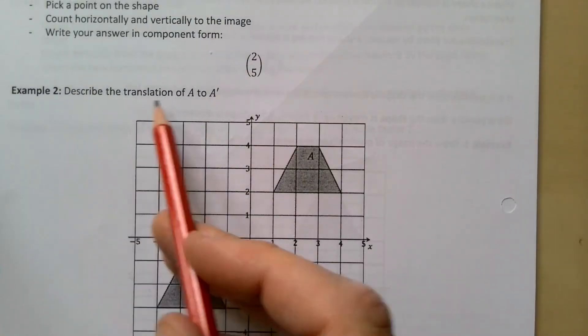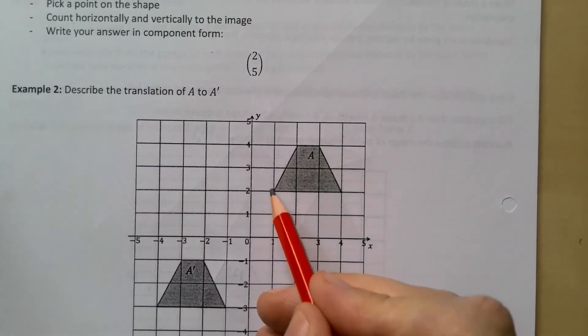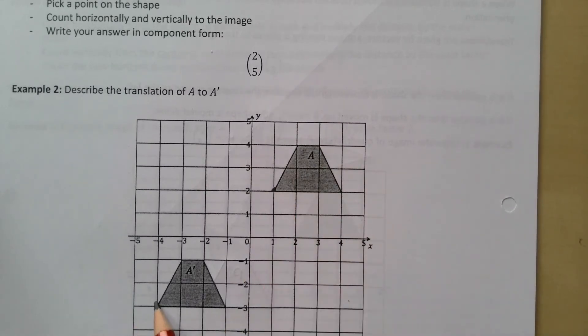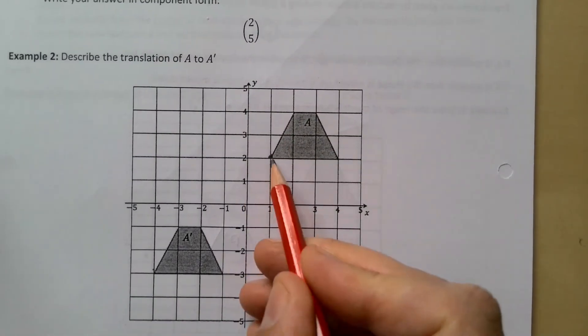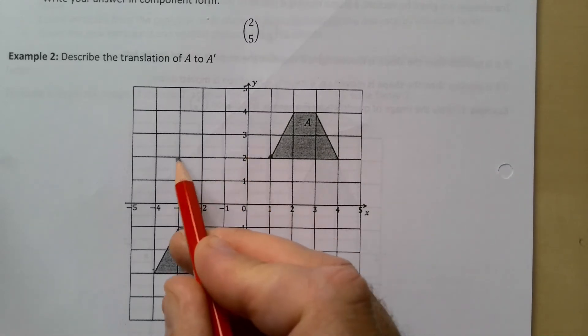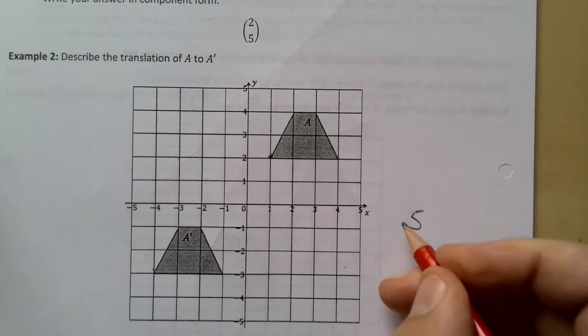Describe the translation which takes you from A to A dash. Make sure you get that right. I'm going to take this point here - now remember I'm not going to here, I'm going to this point here. So how many squares am I going across? 1 2 3 4 5. So I'm going five across. Now note I'm going that way so it's actually a minus 5.